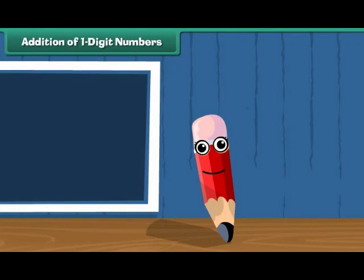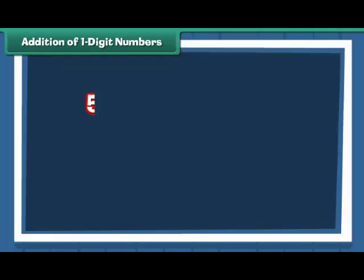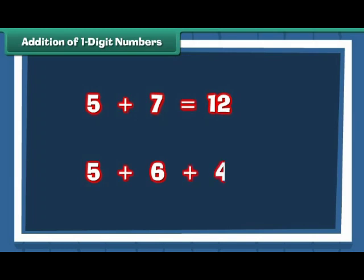Addition of 1 digit numbers. Let us begin with the addition of single digit numbers. 5 plus 7 is equal to 12. 5 plus 6 plus 4 is equal to 15.